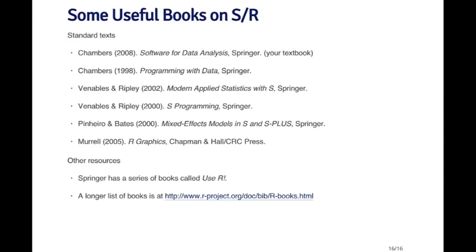Some standard or classic texts in this area: the books by John Chambers — Software for Data Analysis and Programming with Data, both published by Springer. Two books by Bill Venables and Brian Ripley: Modern Applied Statistics with S and S Programming — although they have S in the title, both are very relevant for R programming too. There's Mixed Effects Models in S and S Plus by Pinheiro and Bates, also quite useful for R programmers. Paul Murrell, who designed the R graphics system, has written R Graphics, currently in its second edition. Springer also has a series called Use R!, a collection of relatively short books on using R for different application areas — there may be a book for your particular area. There's also a longer list of books on the R website.